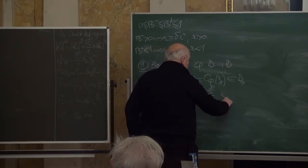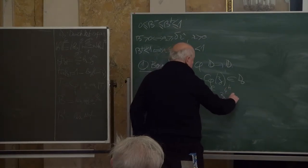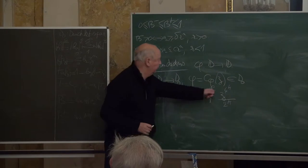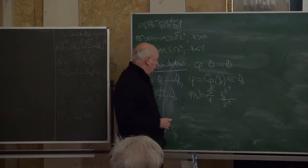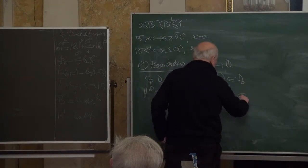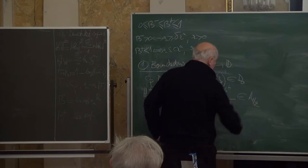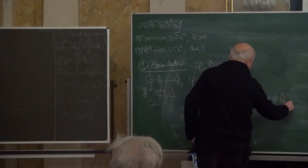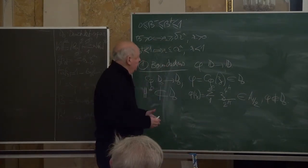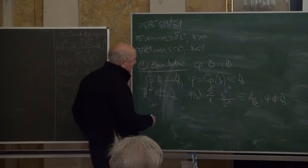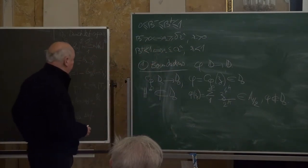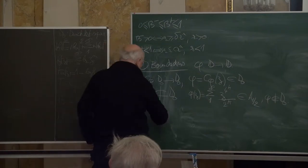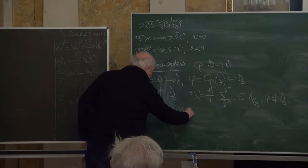Even with stronger assumptions on φ — for example if we take φ(z) = sum from 1 to infinity of a lacunary sequence z^{4^k} / 2^k — this function maps D to itself because the sum of coefficients is exactly 1, and it is not only bounded at the boundary but analytic Lipschitz-1/2. It is easy to check it does not belong to D₀, so this function, despite having some regularity, will not give a bounded operator.